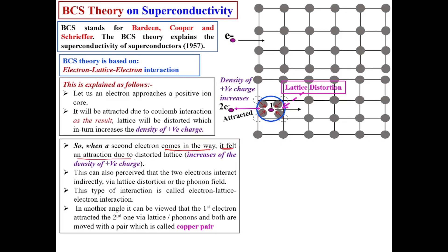Now consider a second electron coming in the way — it feels an attraction due to the distortion of the lattice. Because due to this lattice distortion the density of positive charges increases, this second electron will be attracted. This can also be perceived as the two electrons interacting indirectly via lattice distortion or the phonon field.